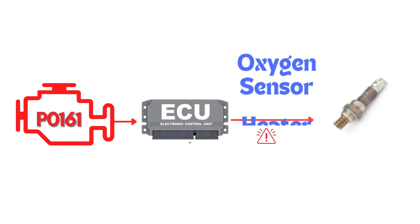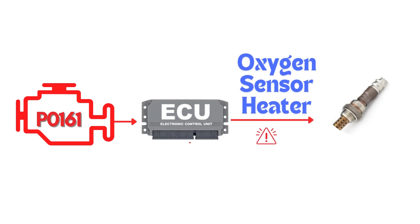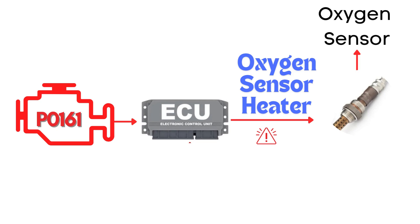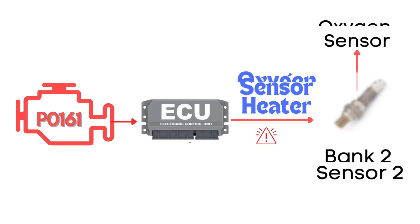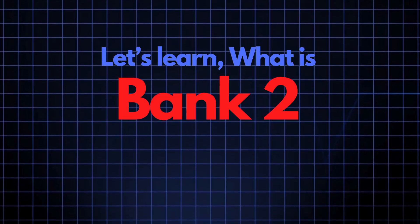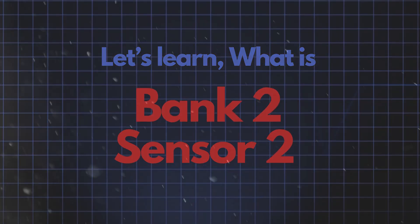This code gets triggered when the engine control module detects a fault in the heater circuit of the oxygen sensor. Specifically, we're talking about the oxygen sensor heater circuit for bank 2, sensor 2. Now let's learn what bank 2 sensor 2 means.